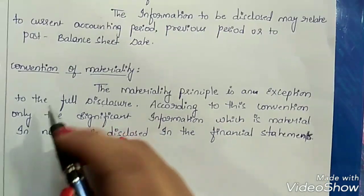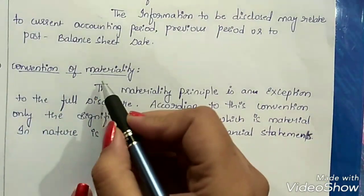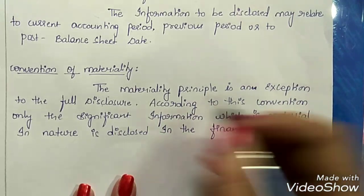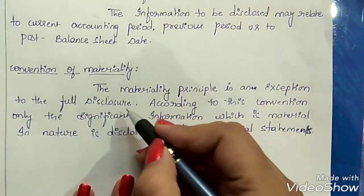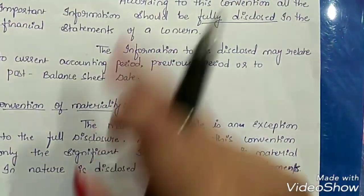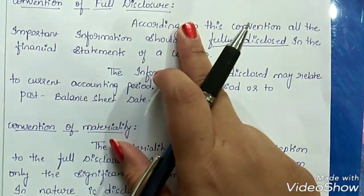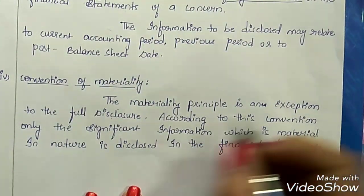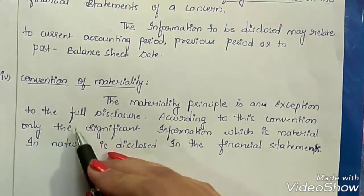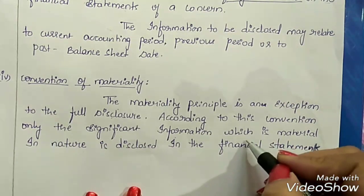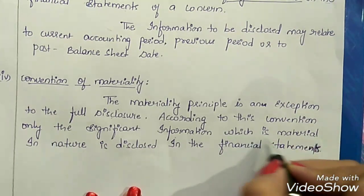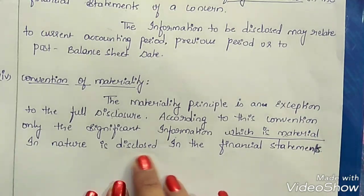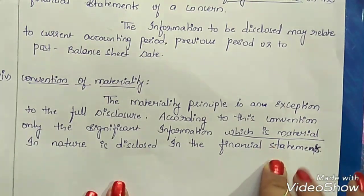The last convention is the convention of materiality. The materiality principle is an exception to the full disclosure convention. According to this convention, only the significant information which is material in nature is disclosed in the financial statements.